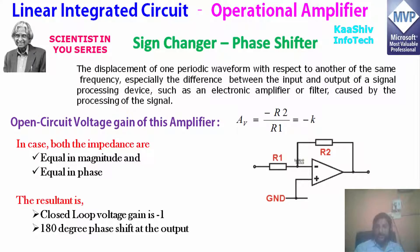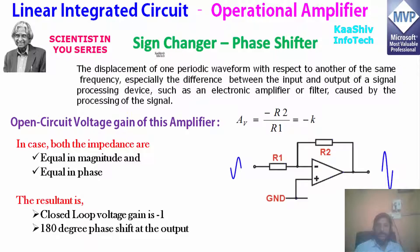R2 divided by R1 is minus 10 — that is the output value. Equal in magnitude with the resistors; equal in magnitude, equal in phase for the closed-loop gain — overall gain is 10, with a 180-degree phase shift. This is the normal sign changer and phase shifter functionality in an operational amplifier.